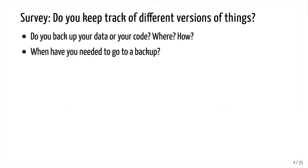Do you keep track of different versions of things? Do you back up your data or code? Hopefully you have a backup — but where and how do you store it? Perhaps you're using Dropbox, Box, Google Docs, or your server has Time Machine. These are all ways to back up code or data. Have you ever needed to go back to a backup? Perhaps you accidentally deleted something, or introduced a bug at some point and needed to go back to a previous version of your code before the bug was introduced.